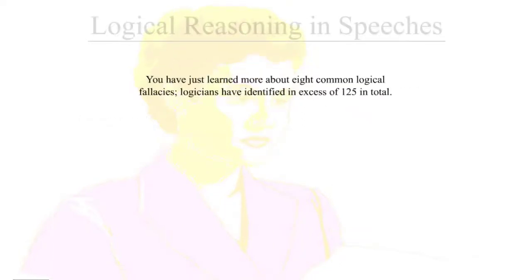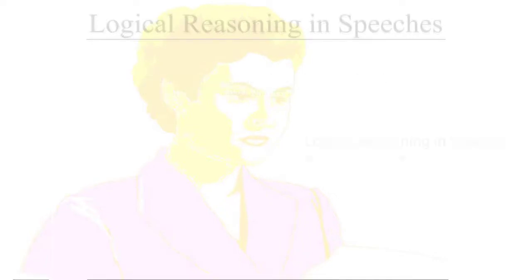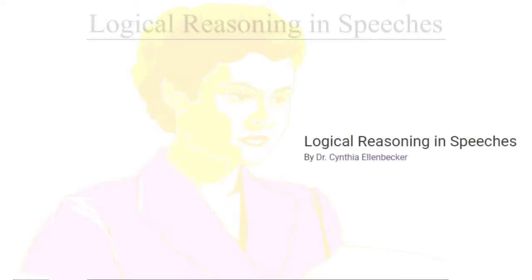You have just learned about eight common logical fallacies. Logicians have identified in excess of 125 logical fallacies. This concludes this learning object on logical reasoning in speeches.